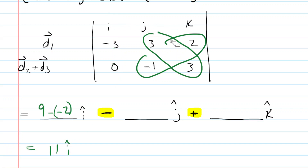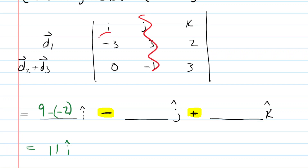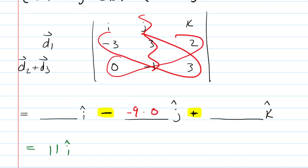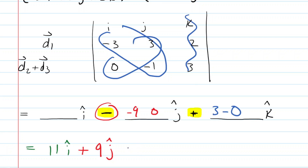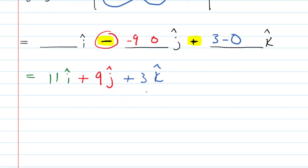For the j hat component, we cover the j column: negative 3 times 3 is negative 9, and 0 times 2 is 0. Subtracting gives negative 9, but with the built-in minus sign, we get plus 9 j hat. For the k hat component, we cover the k column: negative 3 times negative 1 is 3, and 0 times 3 is 0. Subtracting gives 3 k hat. So the final answer to part C is 11 i hat plus 9 j hat plus 3 k hat, all in meters squared.